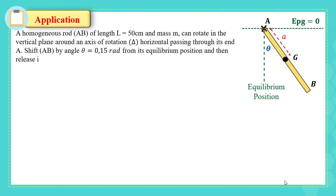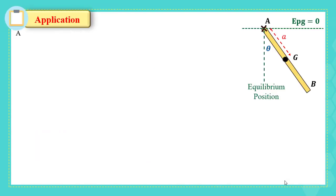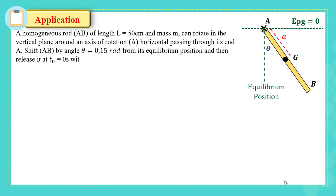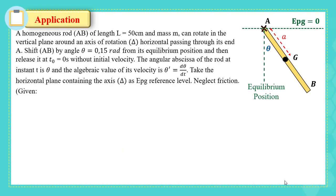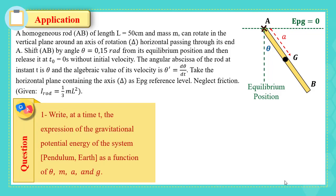Application: Given a homogeneous rod AB of length L = 50 cm and mass M, which can rotate in a vertical plane around a horizontal axis of rotation δ passing through its end A. AB is shifted by θ = 0.15 radians from its equilibrium position and released at t = 0 without initial velocity. The moment of inertia of the rod is given as I = (1/3)ML². Question 1: Write the expression for the gravitational potential energy as a function of θ, M, a, and g. Please pause the video and try to solve it first.